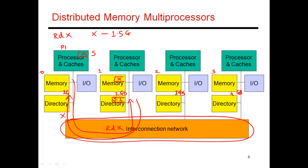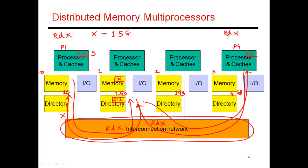Next, processor P4 also tries to do a read of X. It looks up its cache, has a miss, and sends the request to node 2. Again, you read out the memory and directory, realize the block is in shared state, so the clean copy of X is sent back and kept in shared state. The directory is then updated to say that this block is shared in both nodes 1 and 4.